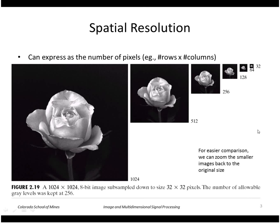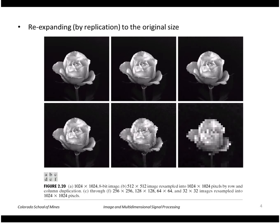So we are reducing the amount of storage necessary to store this image. To see what these small images look like, we can zoom them back up to the original size by replication. In the case of the 32 by 32 image, we're replicating every pixel by 32 by 32 to get the resulting image back up to 1024 by 1024.